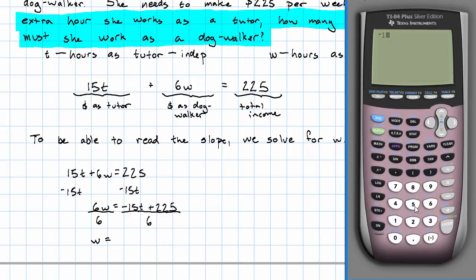negative 15 divided by 6 is negative 2.5, and 225 divided by 6 is 37.5.